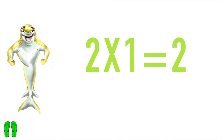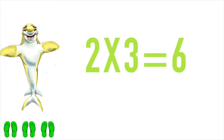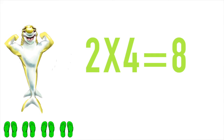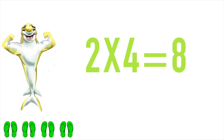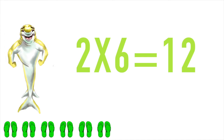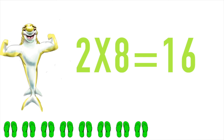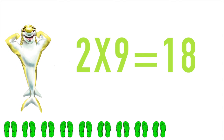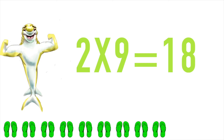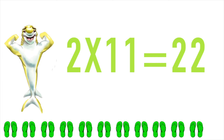Multiply by 2 — stop with my shoes! 2 times 1 equals 2, 2 times 2 equals 4, 2 times 3 equals 6, 2 times 4 equals 8, 2 times 5 equals 10, 2 times 6 equals 12, 2 times 7 equals 14, 2 times 8 equals 16, 2 times 9 equals 18, 2 times 10 equals 20, 2 times 11 equals 22.